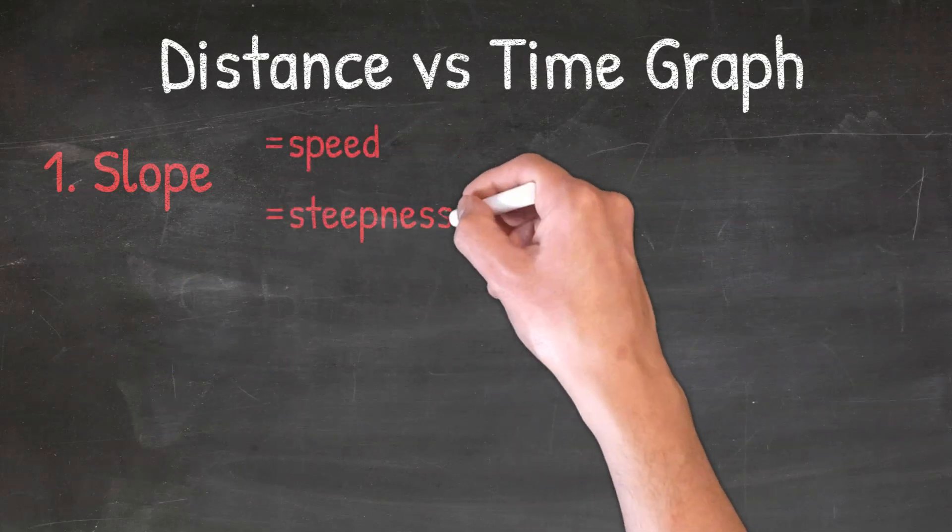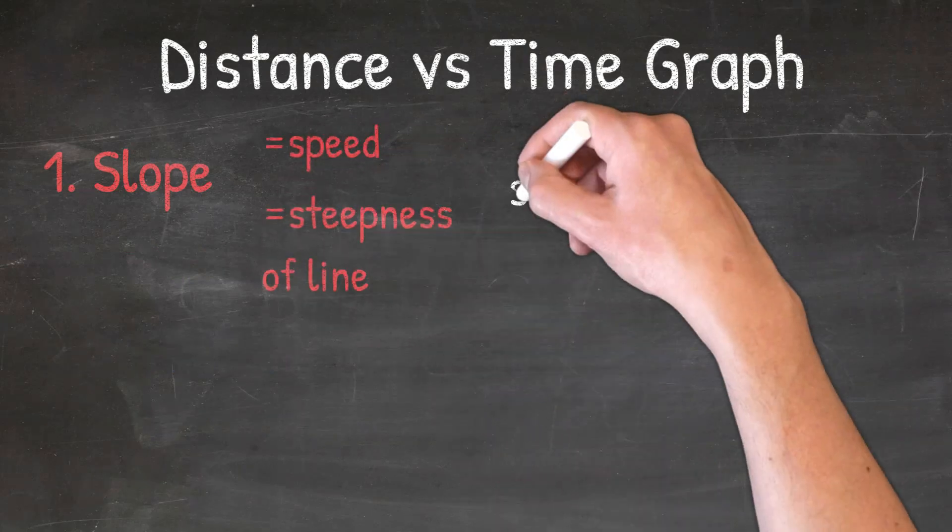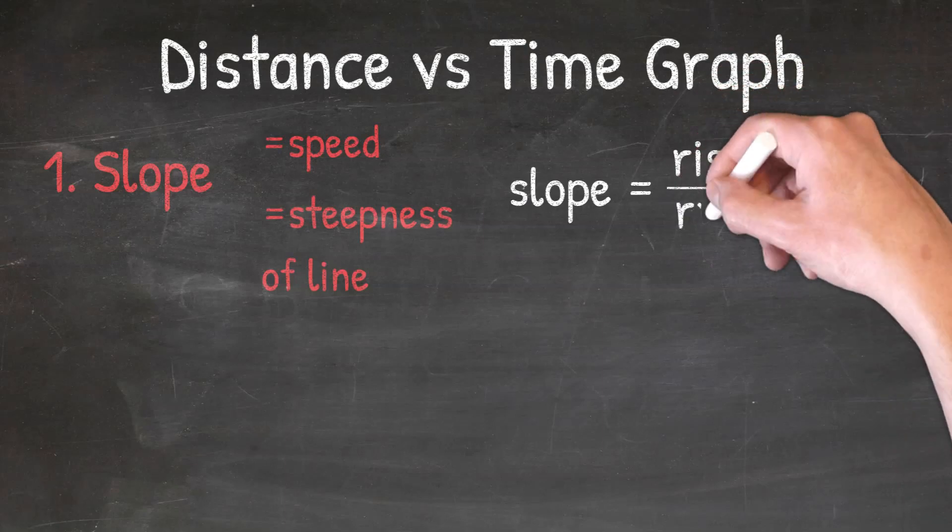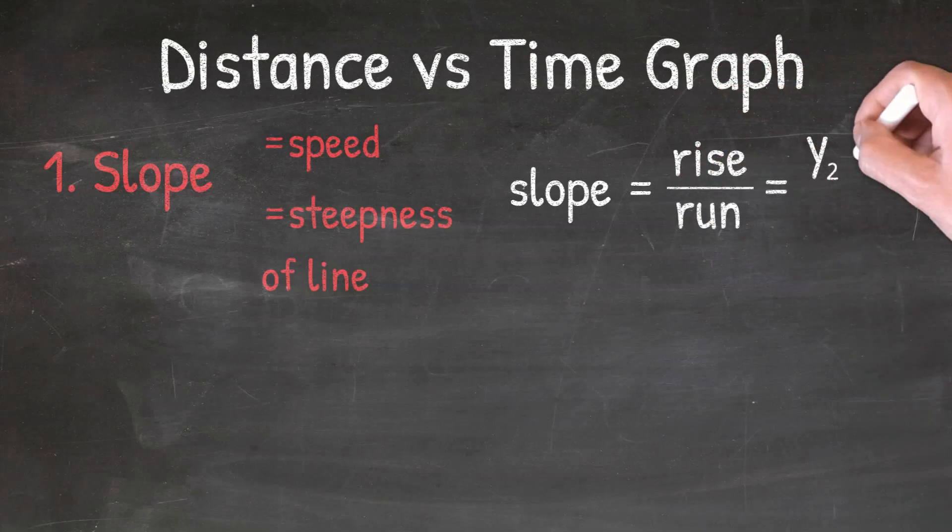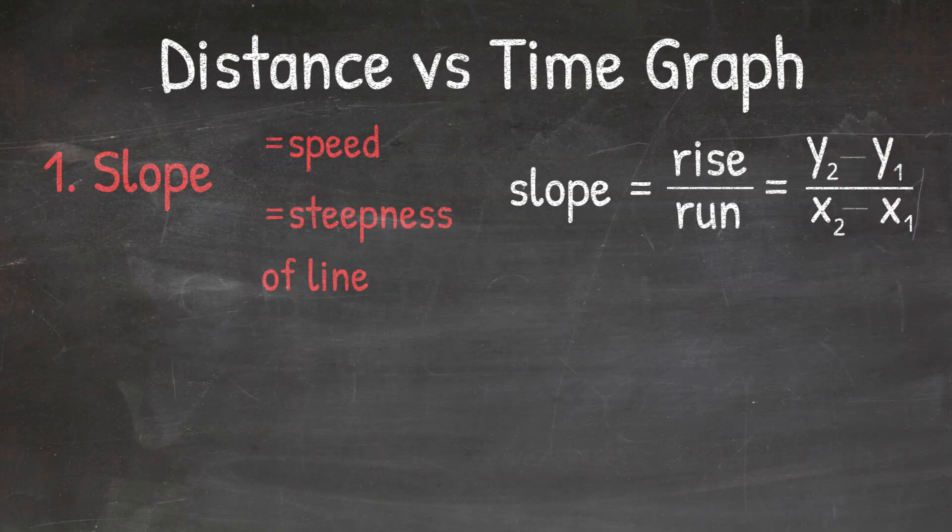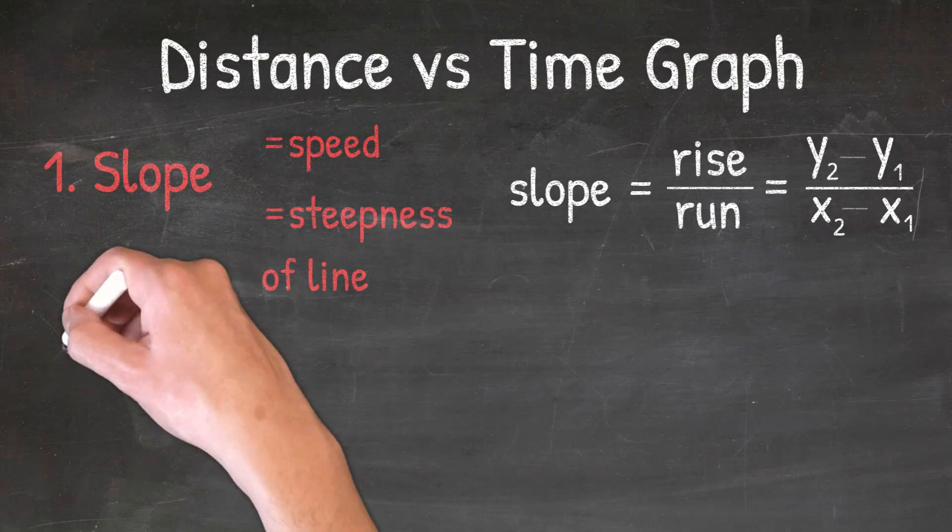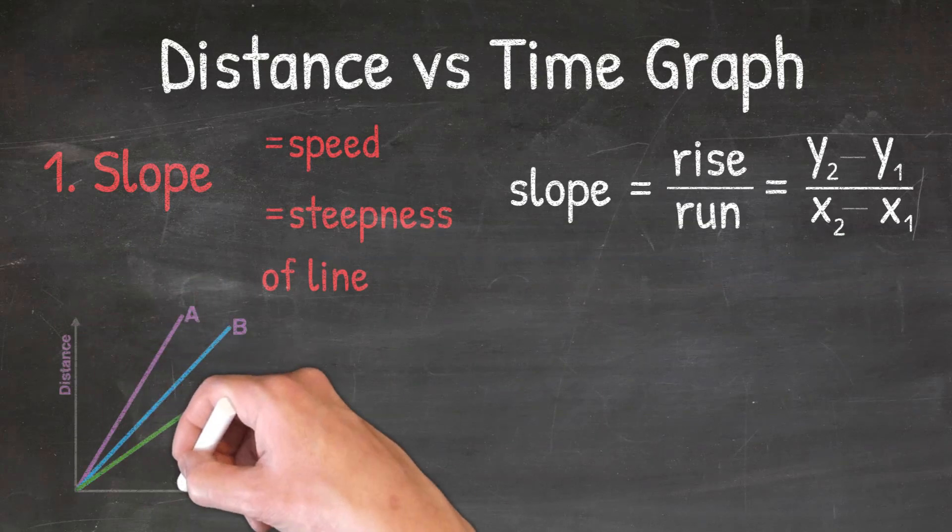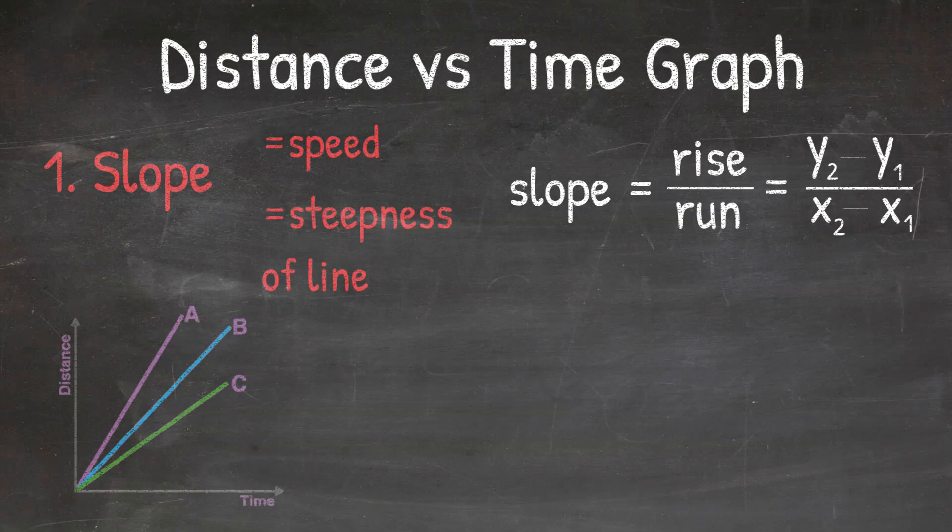Slope is just a measure of the steepness of a line. We can calculate the slope by finding rise over run, or looking at the change in y over the change in x. The slope can either be constant or changing. If the slope is constant, meaning we have a straight line, that means the speed is constant, like we see in the graph here on the left.